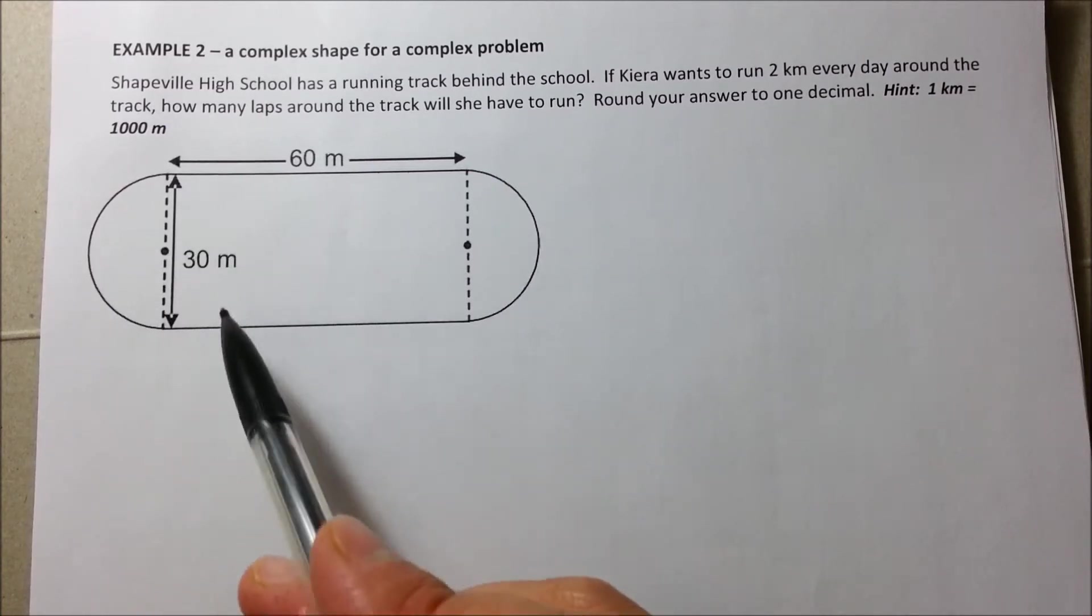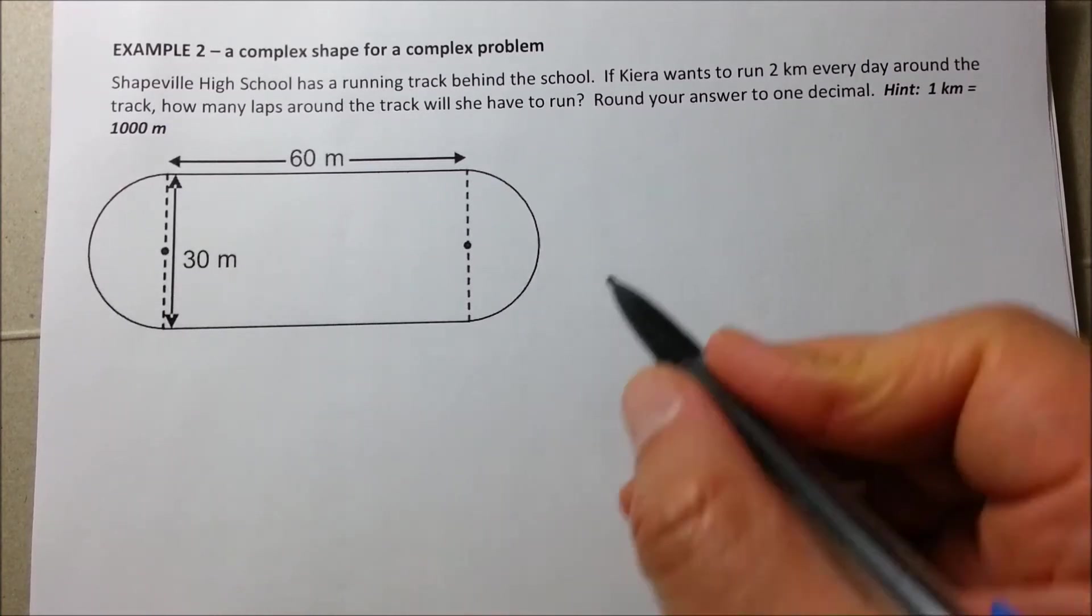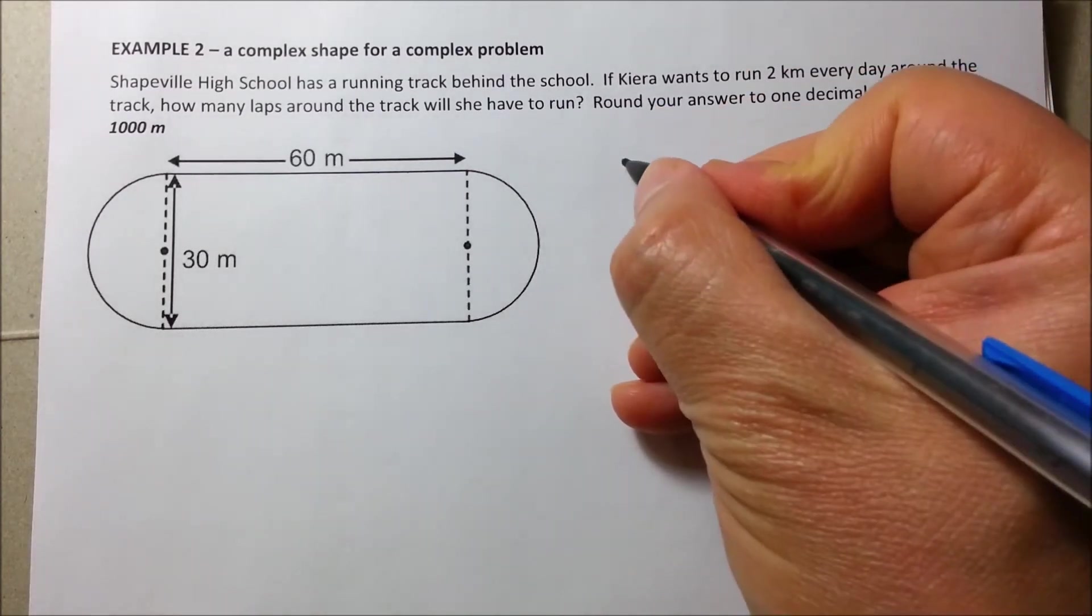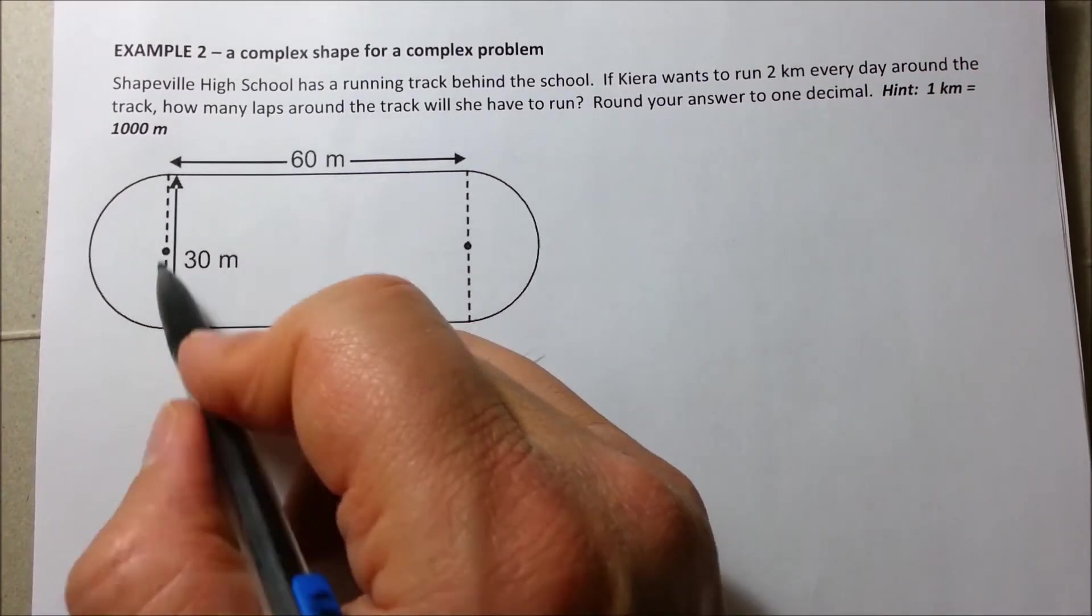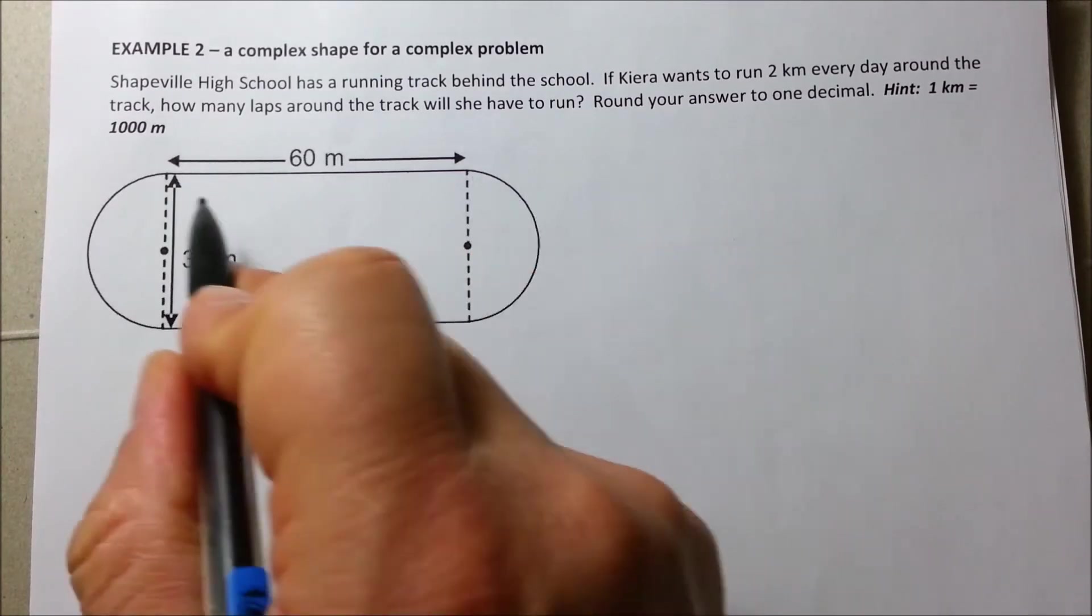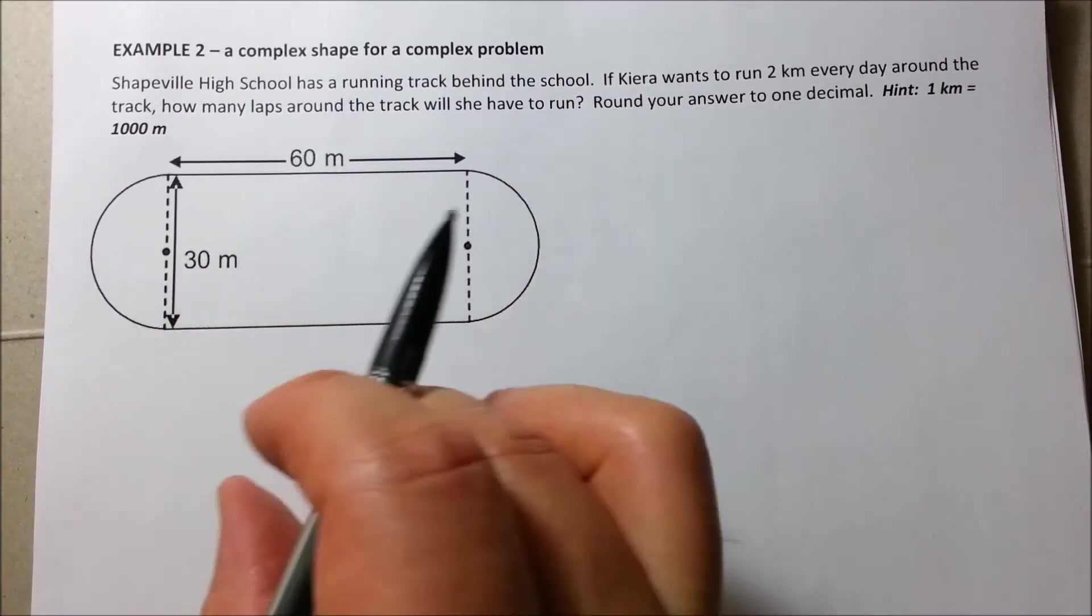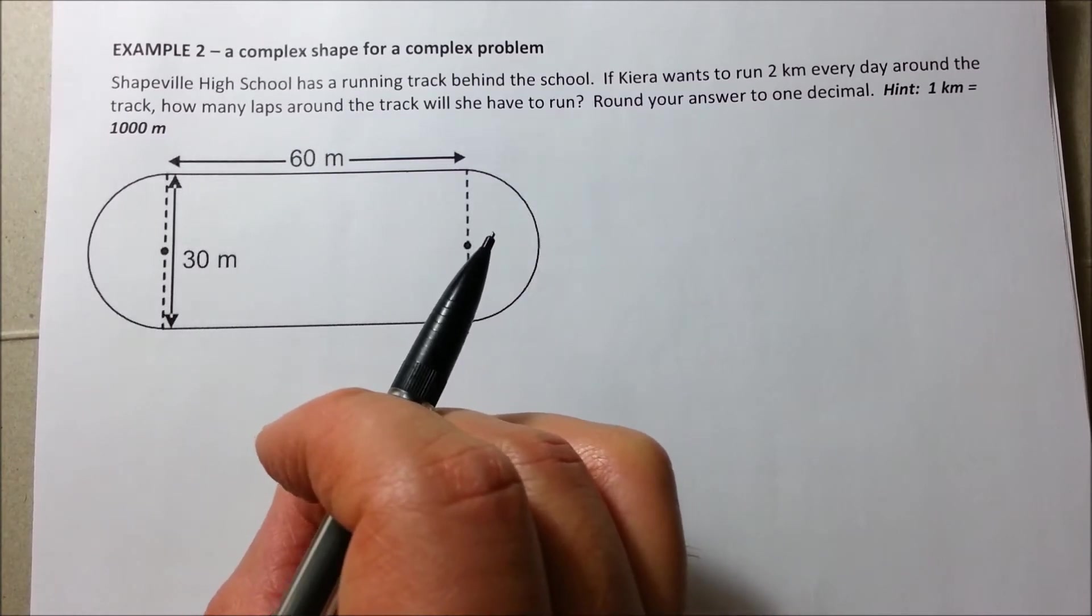So, now we can see there are two shapes here. What are these two shapes? Well, one is the rectangle, right? The rectangle which is right here in the middle and then these two other sides are both semi-circles. If we put them together, we get a complete circle.